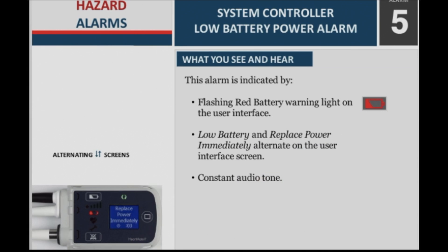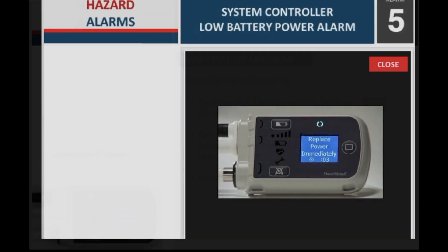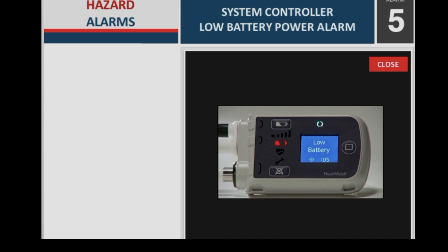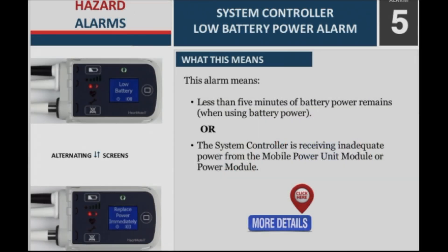System controller low battery power alarm — what you see and hear. This alarm is indicated by: a flashing red battery warning light on the user interface; low battery and replace power immediately alternate on the user interface screen; and a constant audio tone. What this means: Less than 5 minutes of battery power remains when using battery power, or the system controller is receiving inadequate power from the mobile power unit module or power module.